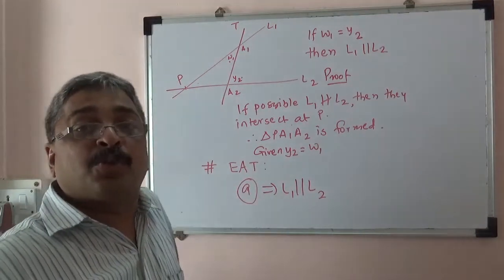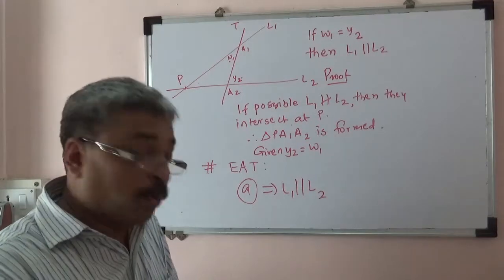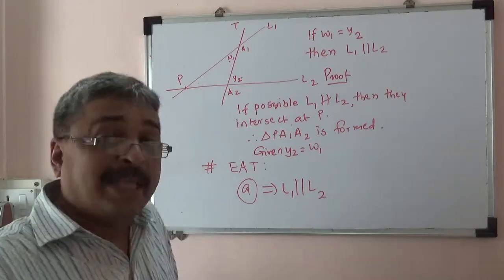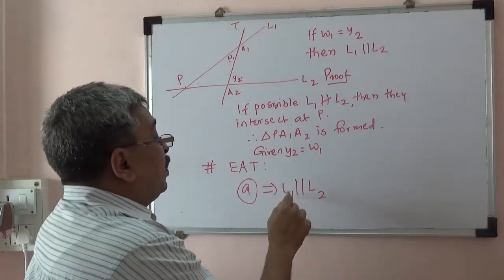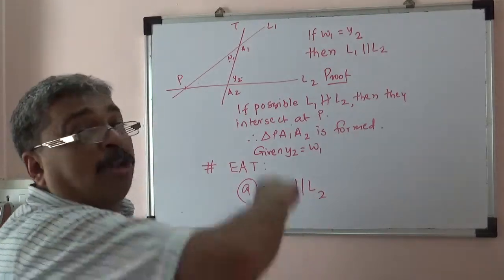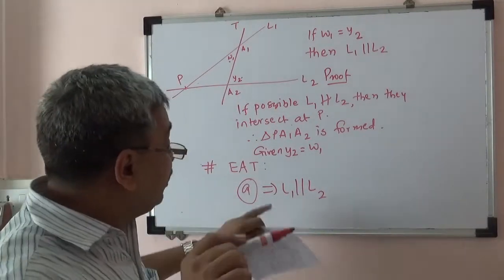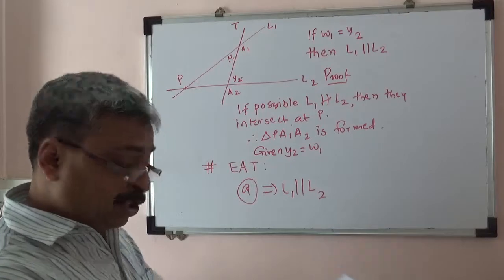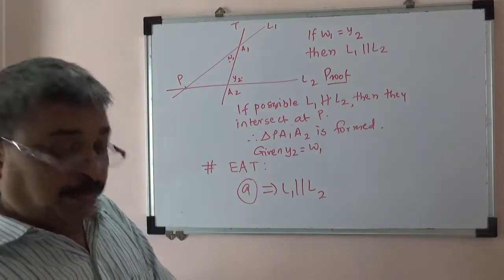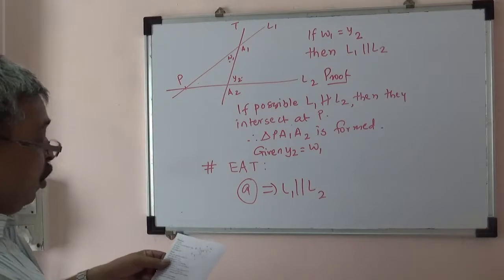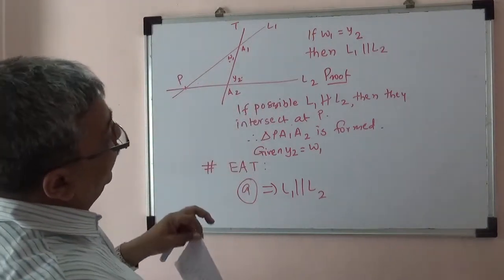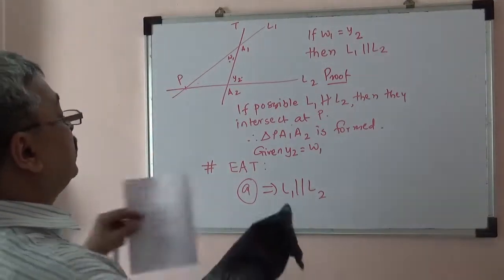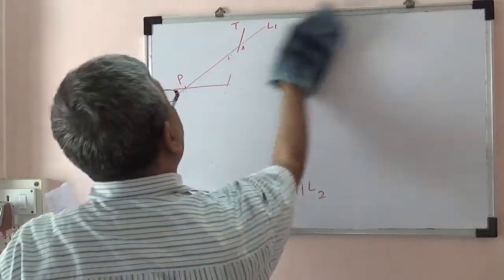If any one of those 8 statements is true, this 9th statement will be true. However, unless we also prove that if L1 is parallel to L2 then all those 8 results are true, we will not be able to include this 9th statement in the equivalent statement set. So the next job is to prove: if L1 parallel L2, then all corresponding angles are equal, all alternate angles are equal, and interior angles on the same side of the transversal add up to 180 degrees.